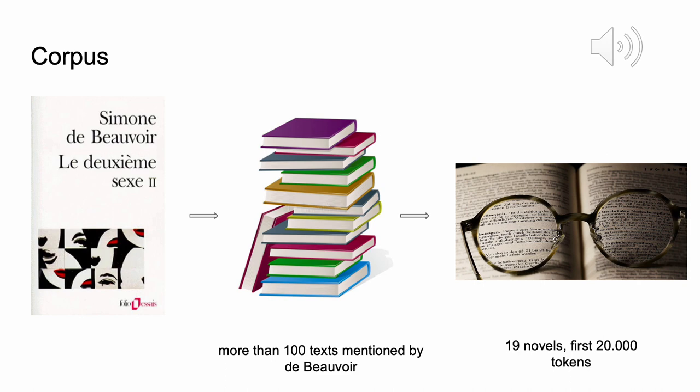In terms of a pragmatic approach, we reduce the corpus of more than 100 texts mentioned by de Beauvoir by close reading and annotating the first 20,000 tokens in 19 different novels. We follow a pragmatic and explorative approach to find out more about the characterization of non-binary roles in literary texts. We decided to annotate the opening passages because we assumed that characters will be introduced and thereby described in detail there — the density of character features is therefore likely to be particularly high.